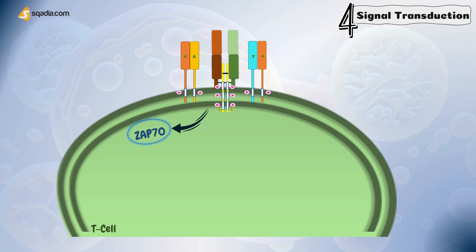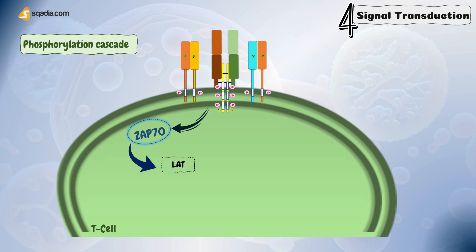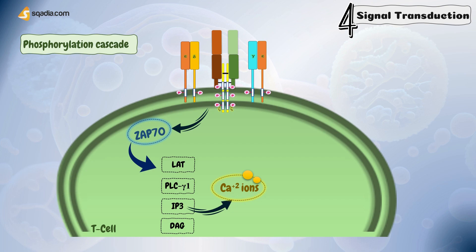This leads to the next step: the phosphorylation cascade. The activated ZAP70 phosphorylates various adapter molecules, such as linker for activation of T-cells, or LAT, and phospholipase C-gamma-1, or PLC-γ1. Activation of PLC-γ1 generates inositol trisphosphate, or IP3, and diacylglycerol, or DAG. IP3 then triggers the release of calcium ions (Ca²⁺) from intracellular stores, resulting in a rapid increase in cytoplasmic calcium levels. Calcium signaling is critical for several downstream signaling events.